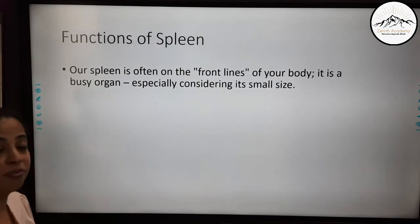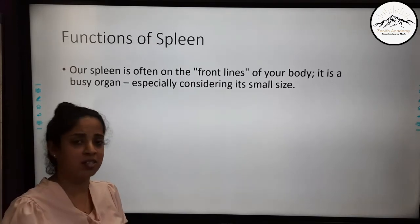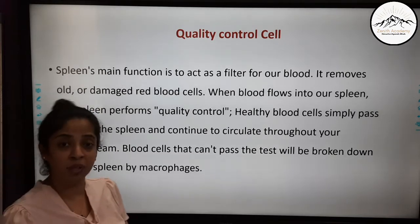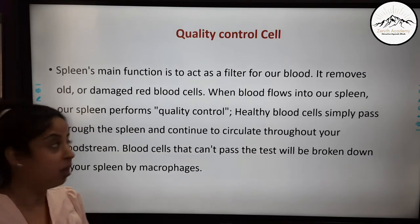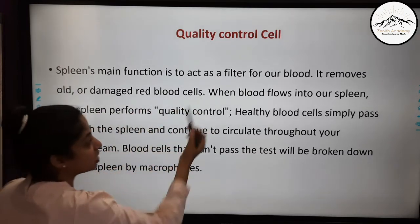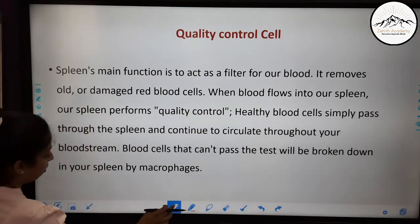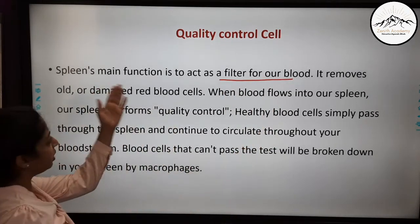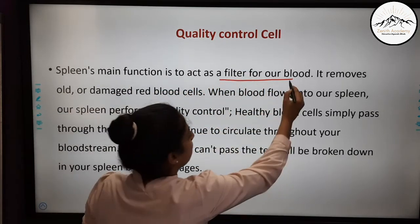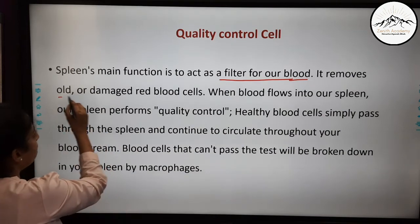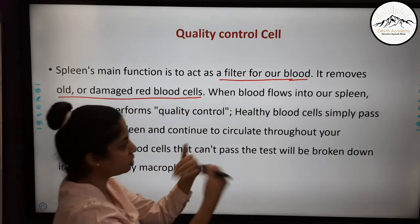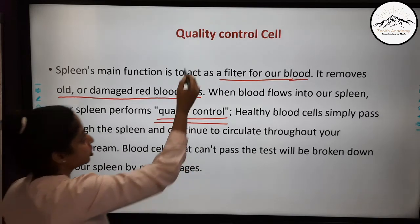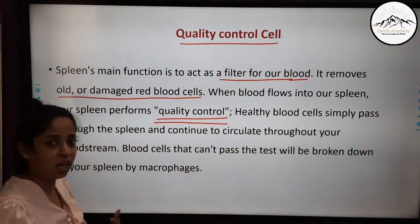Our spleen is often on the front lines of our body, and it is a busy organ especially considering its small size. I have given special headings to each function so that it becomes easier for you to remember them. The first is 'quality control cell.' Spleen's main function is to act as a filter for our blood. When blood flows into our spleen, the spleen performs quality control — that is why I have named this function the quality control cell.